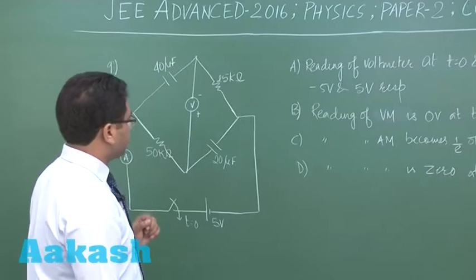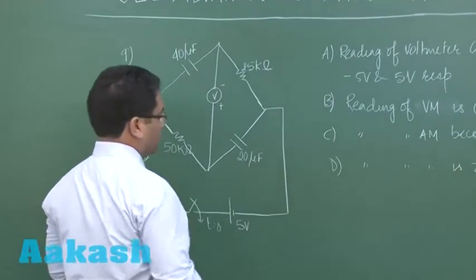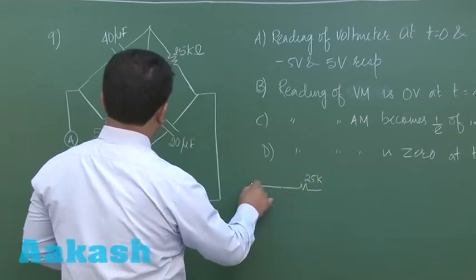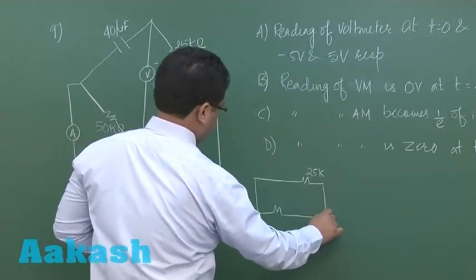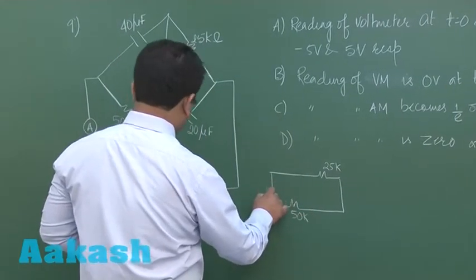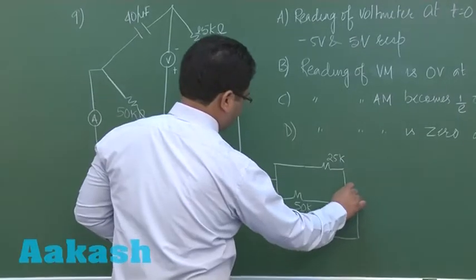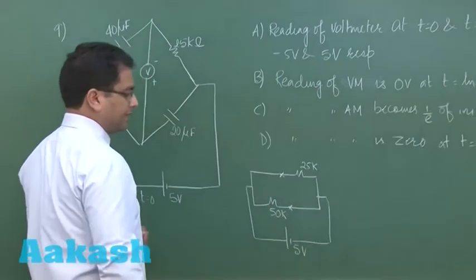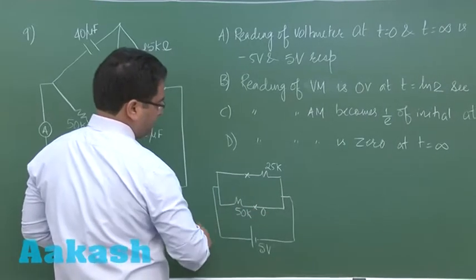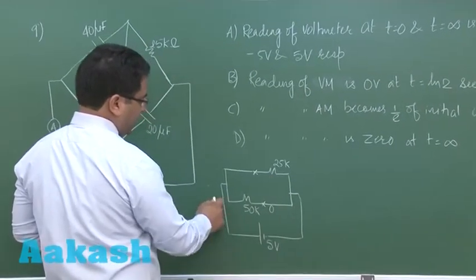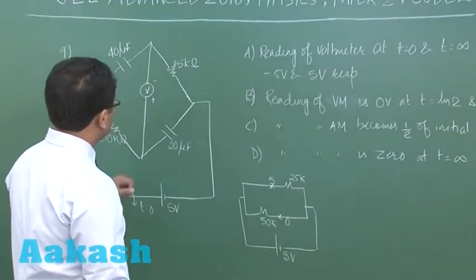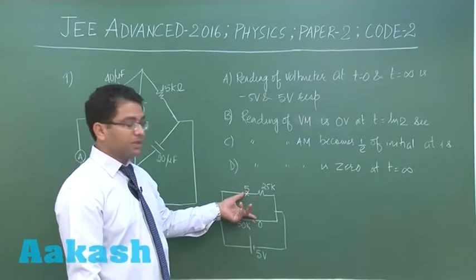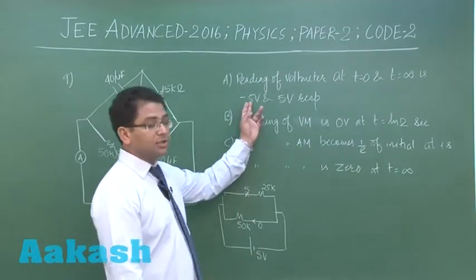At t = 0, the capacitor is shorted. With 50 kΩ and 5 volts, this is the diagram at t = 0 and we need to find the potential difference. If I call one terminal 0, the other is at 5 V. The voltmeter's positive terminal is connected below and the negative terminal is connected above, which means the reading of the voltmeter at t = 0 would be −5 V. The first option is matching.